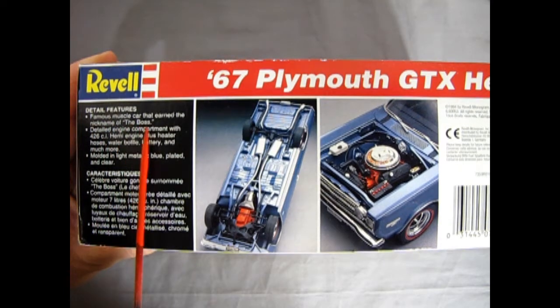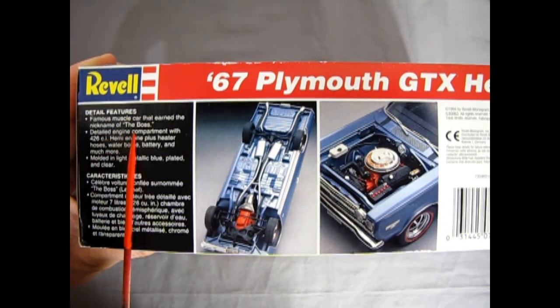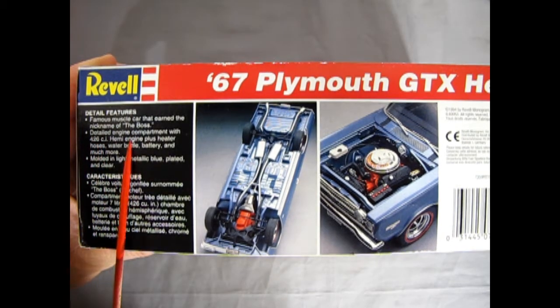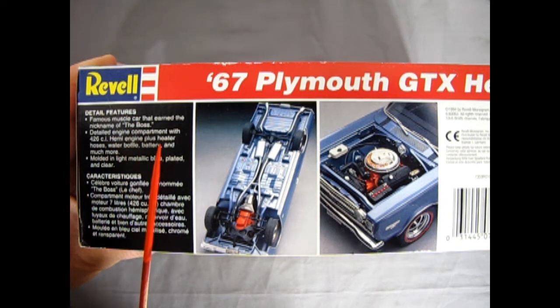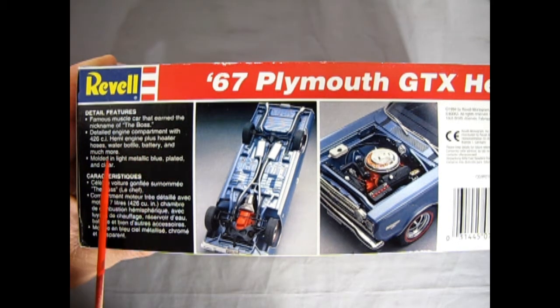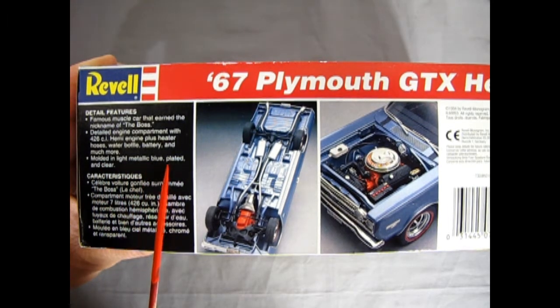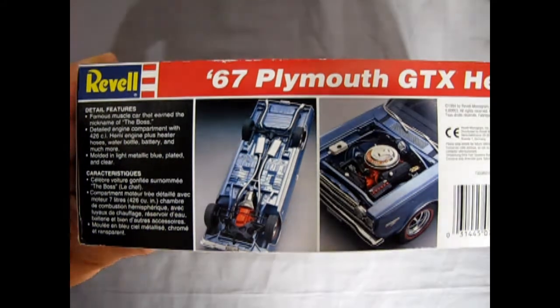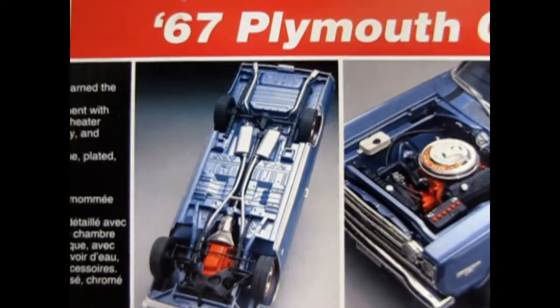Detailed features! Famous muscle car that earned the nickname of The Boss! Long before the Mustang! Detailed engine compartment with 426 cubic inch Hemi engine, plus heater hoses, water bottle battery, and much more! Molded in light metallic blue, plated and clear. So we get a bit of a color change with this. It actually matches the color on the box on this side.